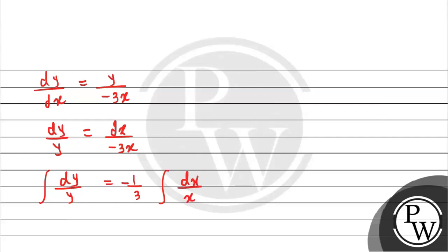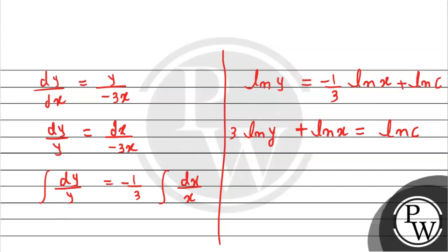Taking integration: ∫dy/y equals -1/3 ∫dx/x. Integration of 1/x is ln(x), so we get ln(y) equals -1/3 ln(x) plus constant of integration, which we write as ln(c). This becomes ln(y) equals ln(x^(-1/3)) plus ln(c).